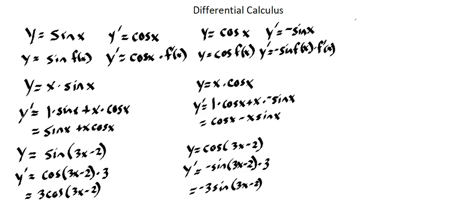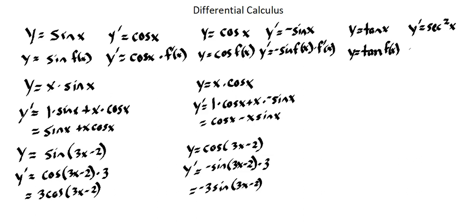Now let's look at the tangent function. If our function is tangent of x, then the derivative is secant squared of x. And if we're working with a more involved function — tangent of f(x) — our derivative is secant squared of f(x) times the derivative of f(x).